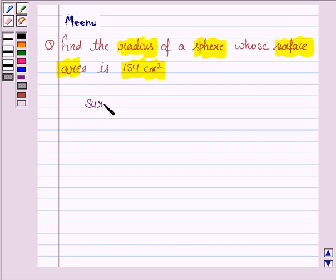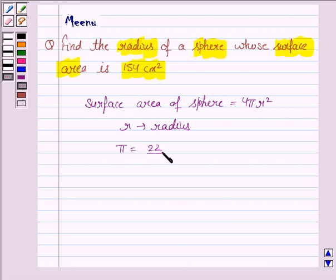The formula for the surface area of sphere is 4πr² where r is the radius of the sphere and the value of π is 22 upon 7. We have to find the radius of the sphere.